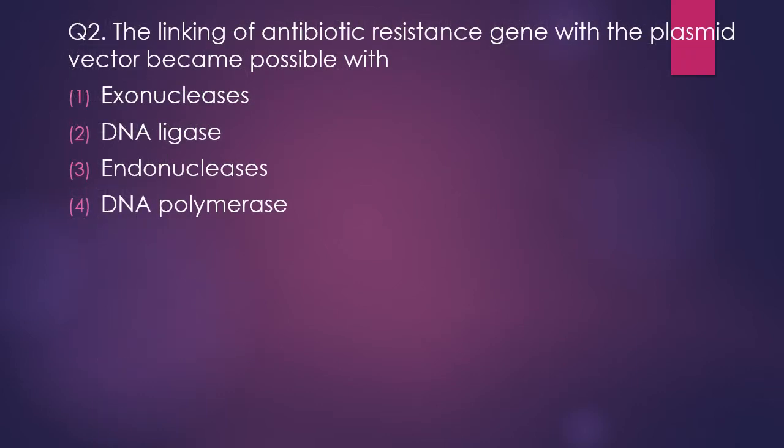Question 2. The linking of antibiotic resistant genes with a plasmid vector became possible with: Exonucleases, DNA ligases, Endonucleases, or DNA polymerases. The correct answer is option 2. With the discovery of DNA ligase, the linking of genes became possible.